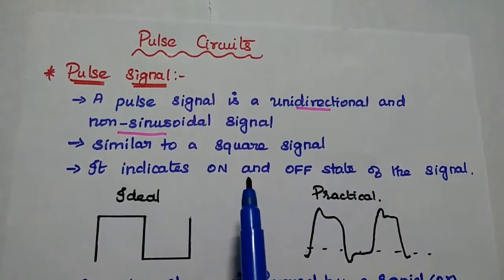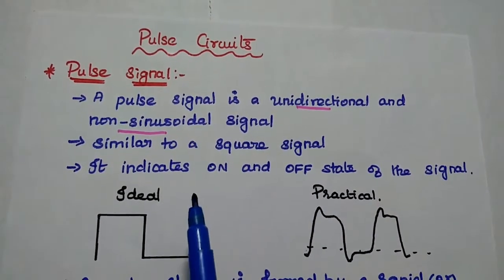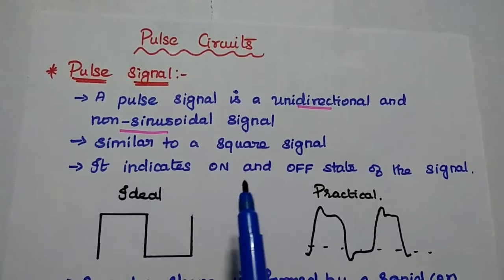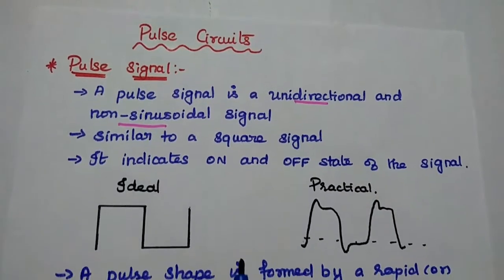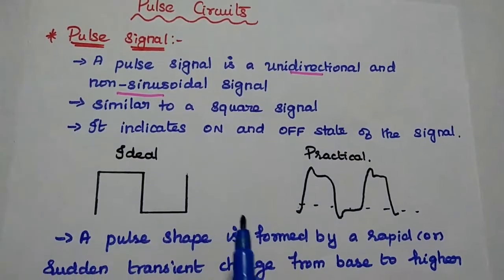A pulse signal is a unidirectional and non-sinusoidal signal. It is similar to a square signal but not exactly symmetric. It indicates on and off state of the signal.